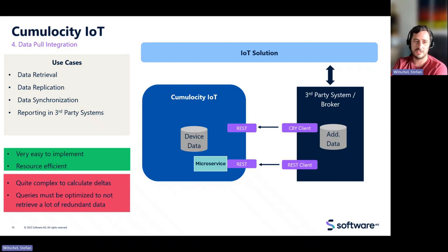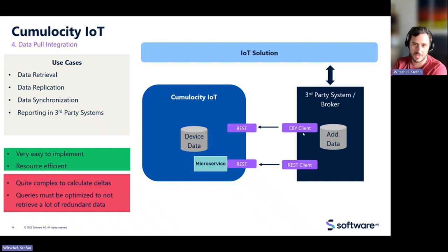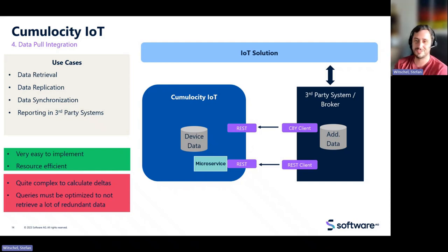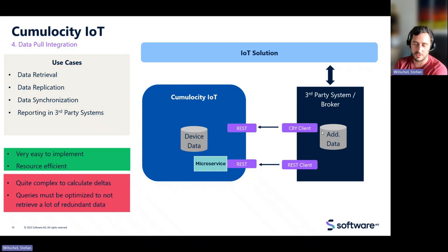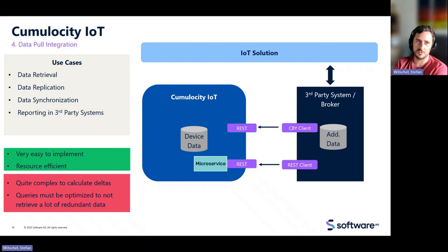The pros of data pull integration: it's easy to implement because Cumulocity has very good REST API documentation, and pre-built clients are available. It's also very resource-efficient from a Cumulocity perspective — you just query the database, get a request, build the query, collect the data, and send it back. Unlike push integration, no queues are held all the time. And on the client side, if it's down for a few minutes and it runs once per day, high availability is less critical.